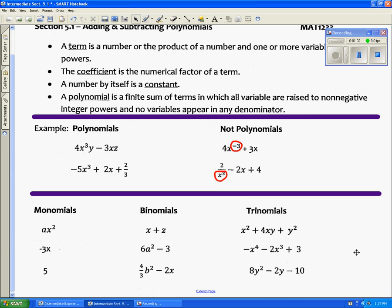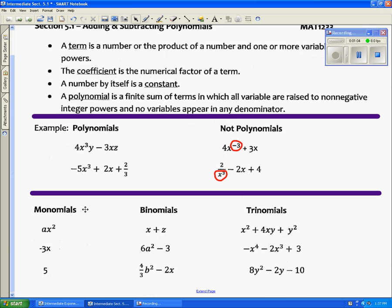Next we look, as we look down we have monomials, binomials, and trinomials. These are all polynomials with special names. Mono means one, so it's one term. A constant is also considered one term.